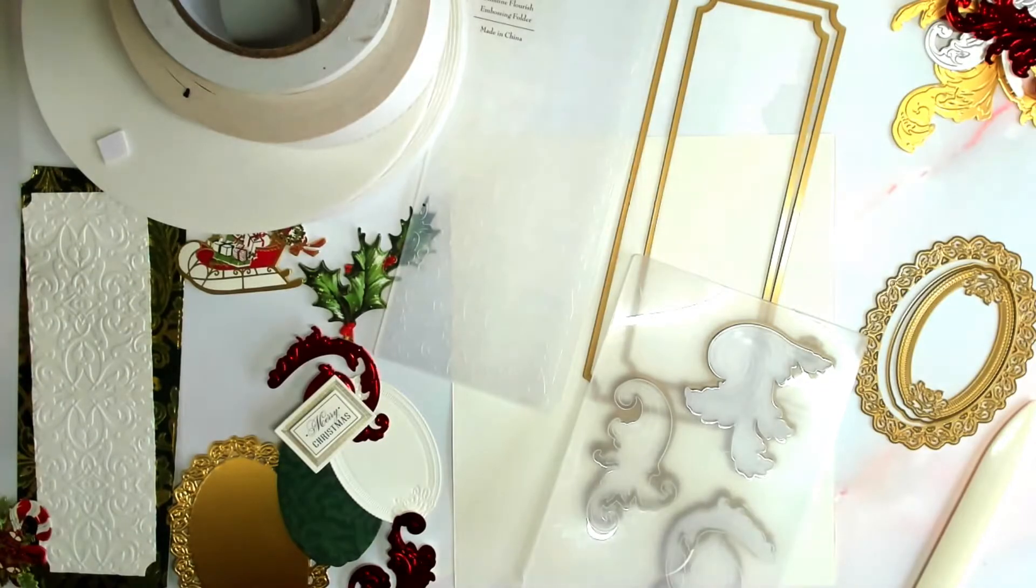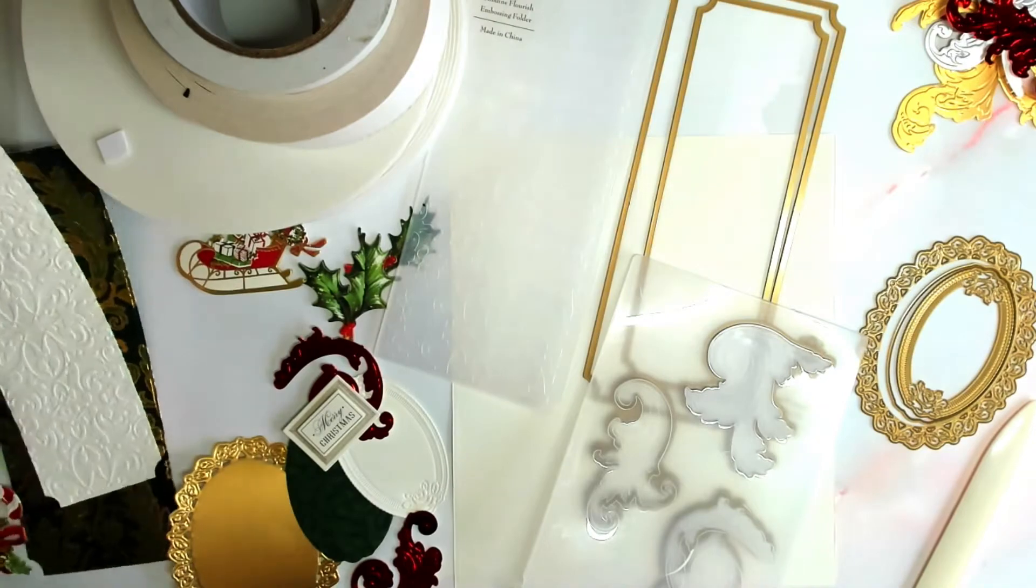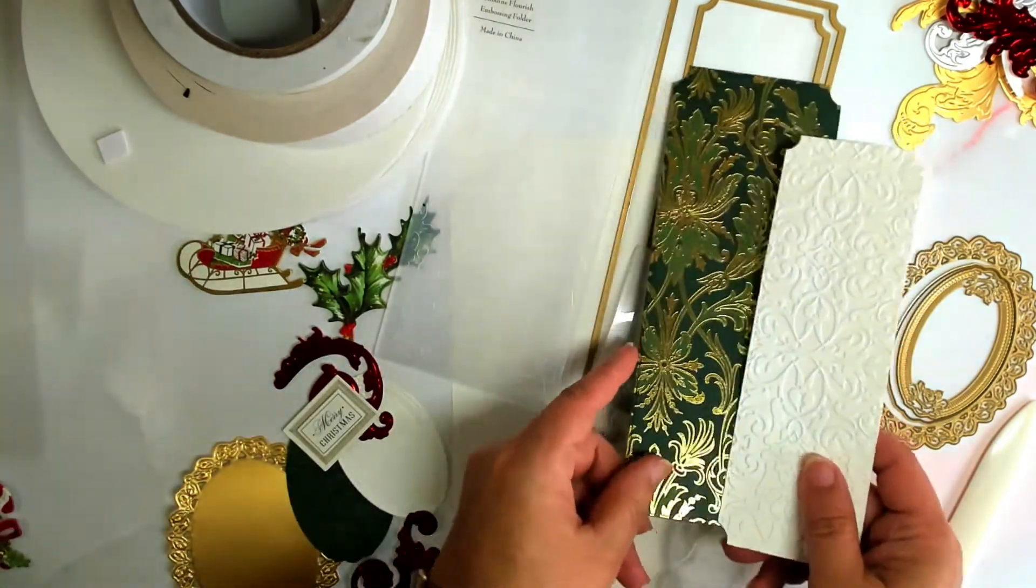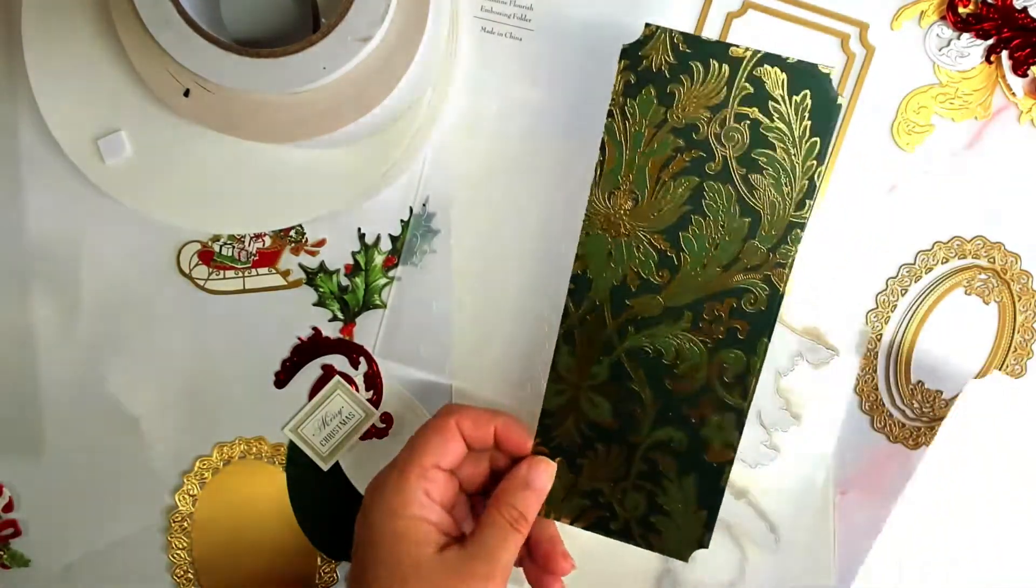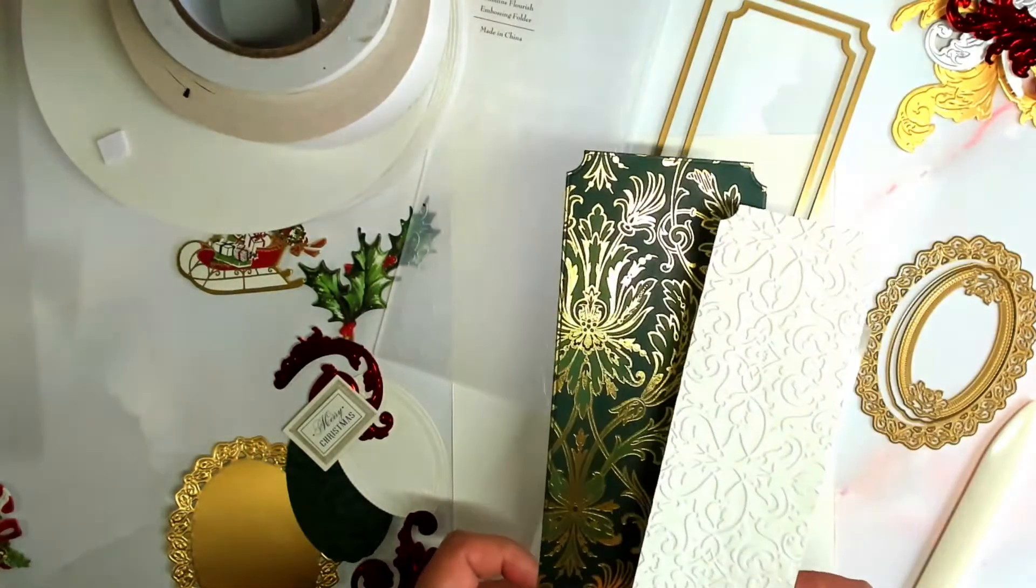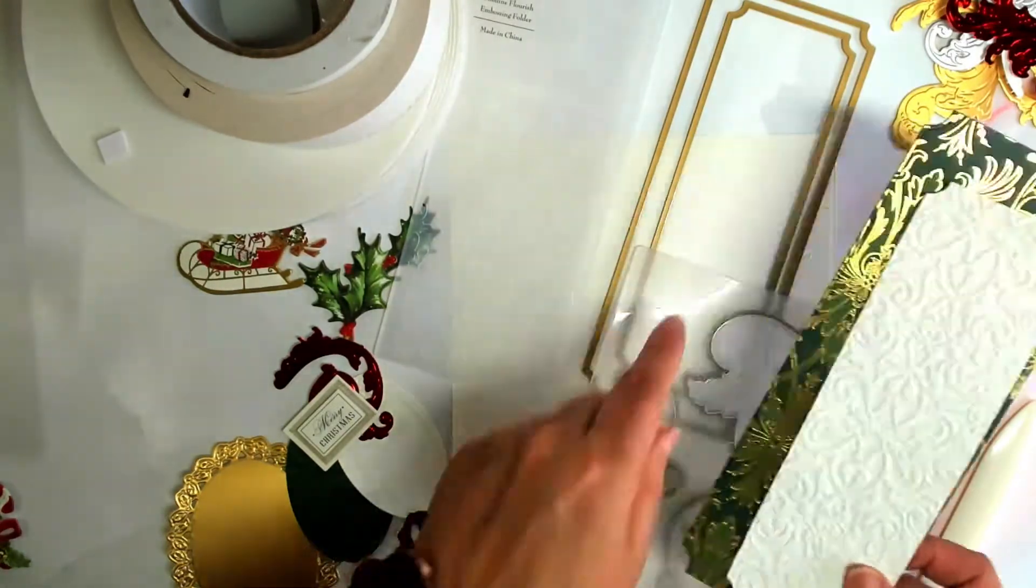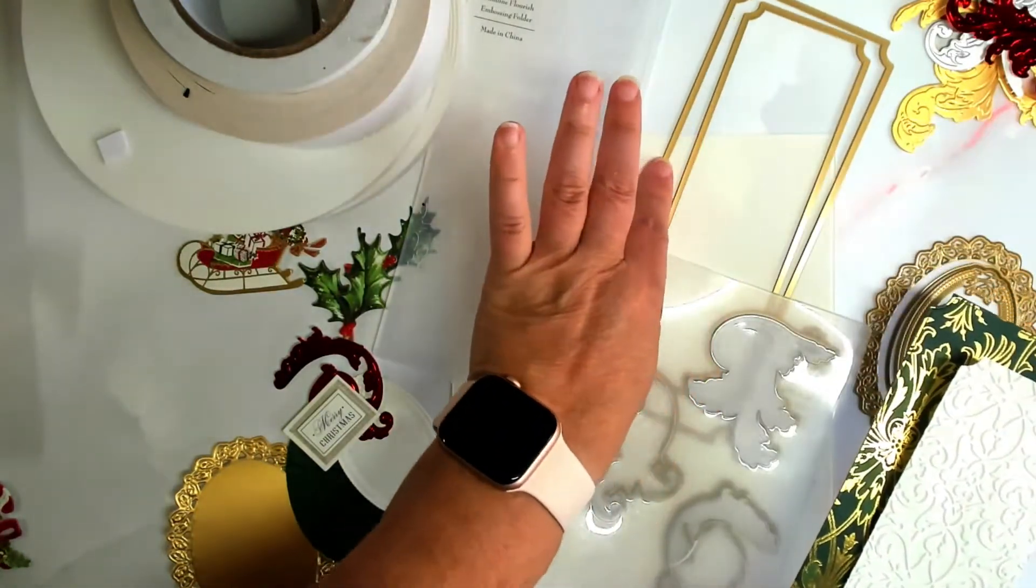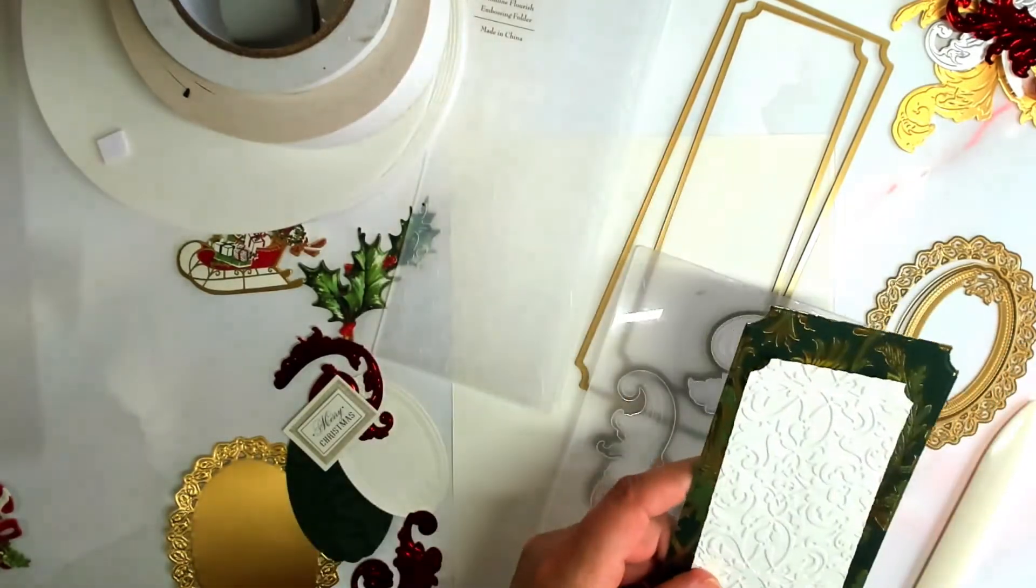Here are all the materials that I used to make my slimline Christmas card. All the materials will be listed below in the description. I used the largest compendium die to cut the green and gold paper. Isn't it gorgeous?